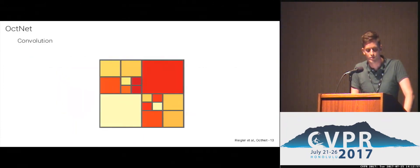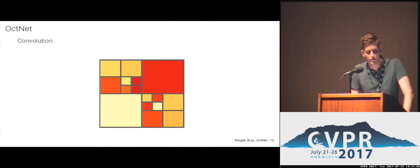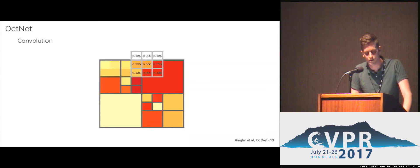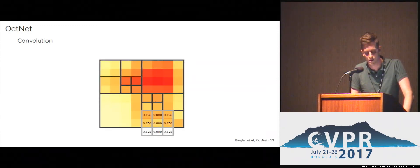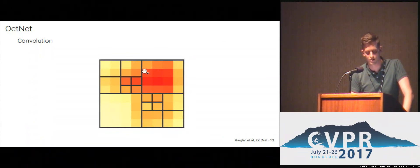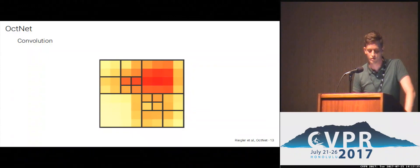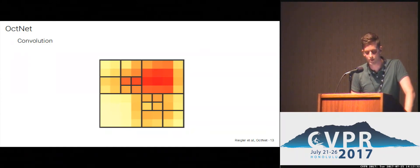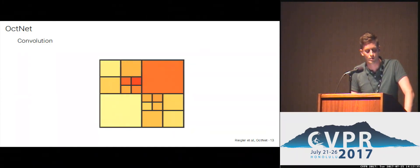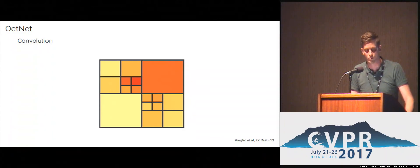Regarding network operations, we have to define them specifically for this irregular data structure. For the convolution, we apply the weight filter on each voxel location as you would on a uniform grid. This results in different responses within a single octree cell. However, to avoid wasting memory, we use a single feature vector inside larger octree cells by summarizing responses via pooling. All these operations are differentiable, so we can do end-to-end learning on this structure.